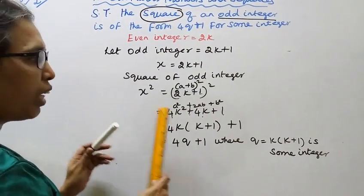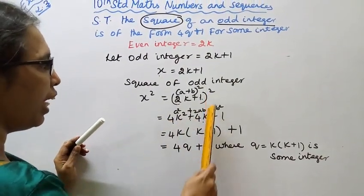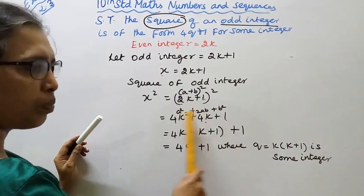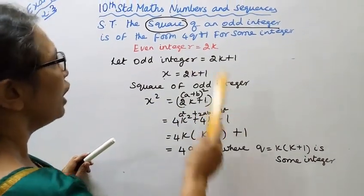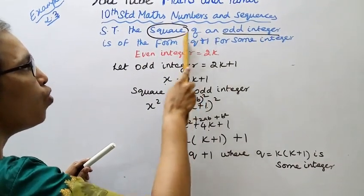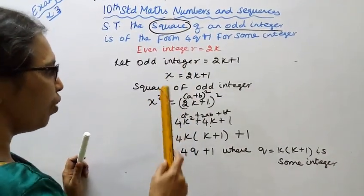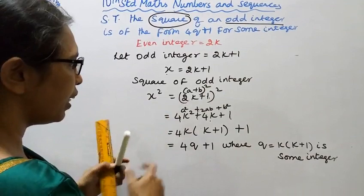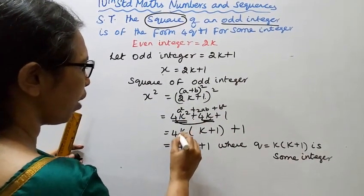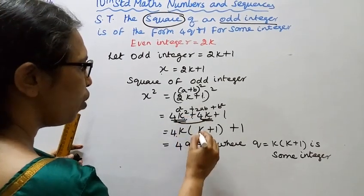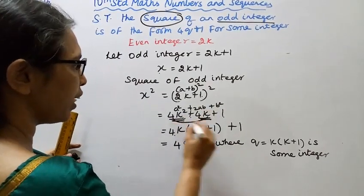You can see the identity of odd integer: 4K squared plus 4K plus 1. This is the square of odd integer. We need the formula 4Q plus 1. So we take out 4K. The remaining 4K squared plus 4K is 4K into K plus 1.